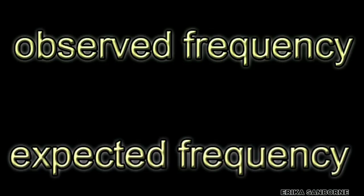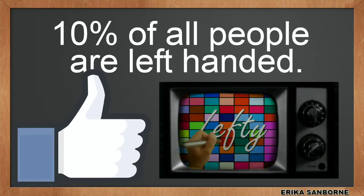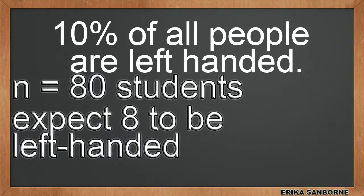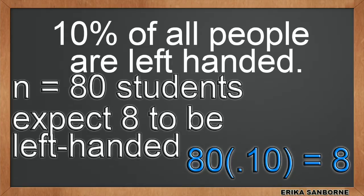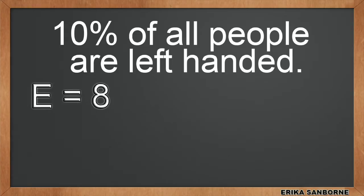What are we going to do with those? We can think about what we'd expect to have observed — we always have an expectation of some kind. For example, I know that 10% of the human population is left-handed. Suppose I have 80 students; I'd expect 8 of them to be left-handed. The basis for my expected frequency of 8 is the known statistics about people in general, that there's 10% left-handed. So let's say I survey my 80 students and I observe that 11 of them are left-handed — 11 out of 80. Expected frequency is 8 left-handed, and my observed frequency is 11 left-handed.